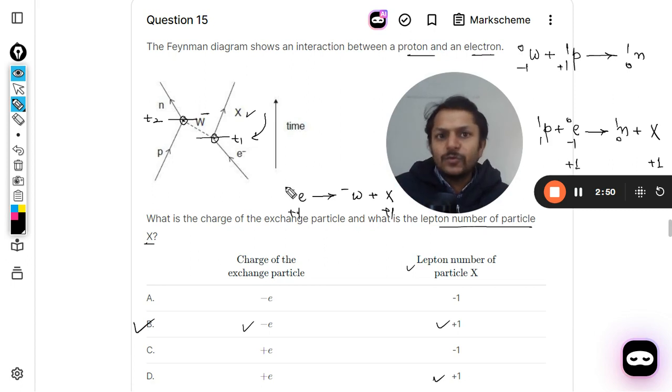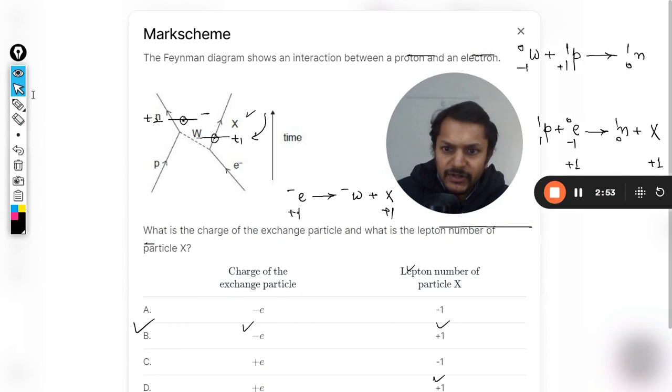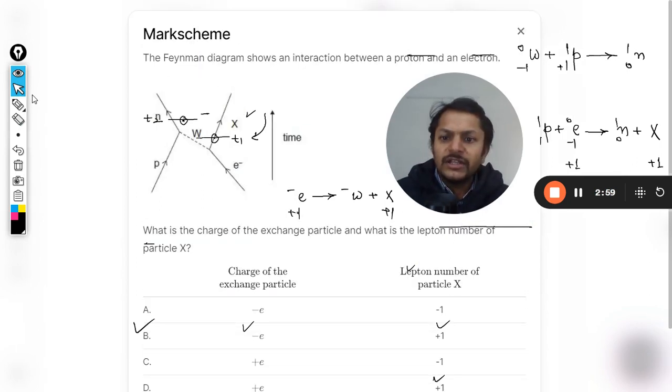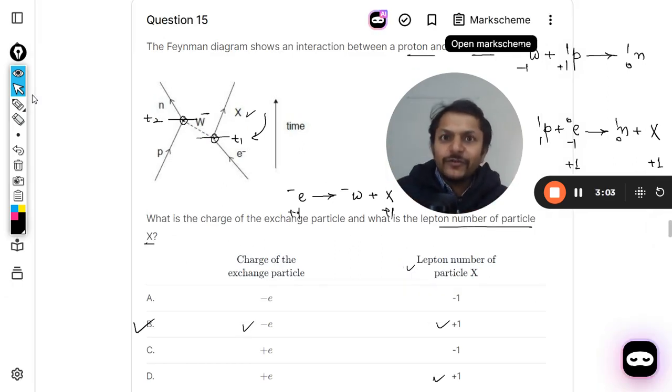So the answer should be B. This is my explanation. Let us see what is the answer given in the mark scheme. I think the answer will be B, and yes, according to the mark scheme also the answer is B. So this is the explanation for this question. This is Professor Varun. Thanks for watching the video. Please subscribe to the YouTube channel. All the best, bye.